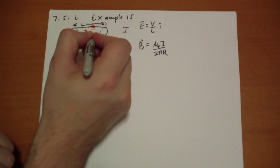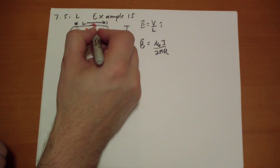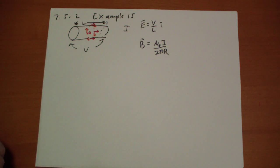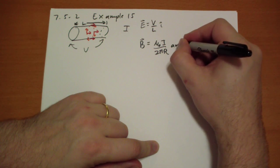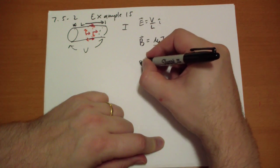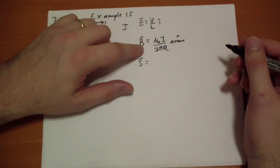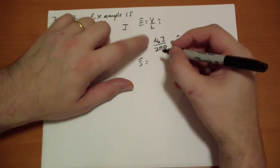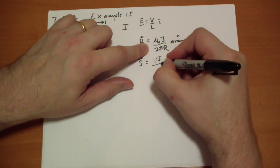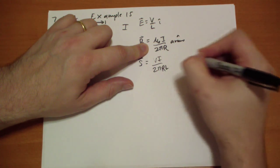So E is like this. And so the Poynting vector, S vector, the S vector is E cross B, 1 over mu-naught E cross B, so we have V I over 2 pi r L.